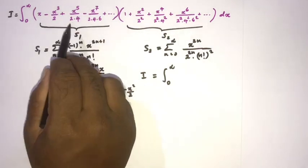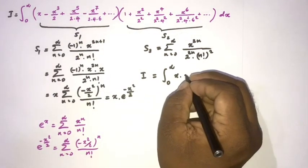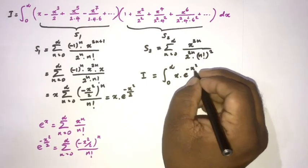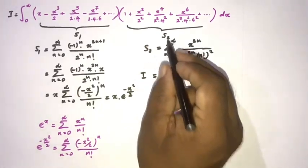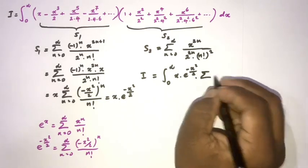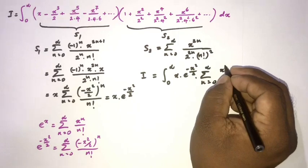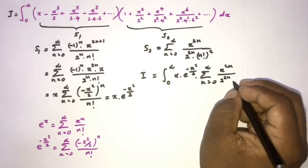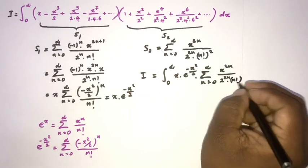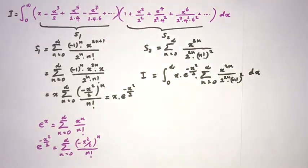Our integral I equals the integral from 0 to infinity, integral from 0 to infinity, of x times e^(-x²/2) times S2 — that is, the sum from 0 to infinity of x^(2n) over 2^(2n) times (n!)² — dx dt.